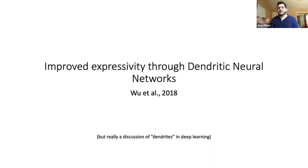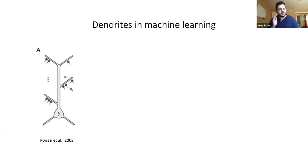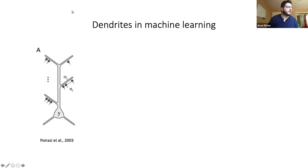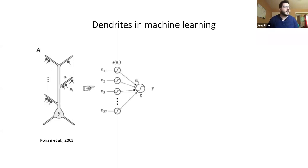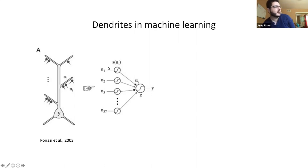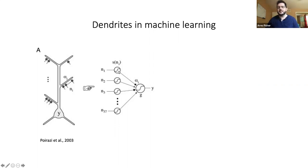I wanted to wrap my head around that and see what the potential is in different directions. The earliest reference I could find on using dendrites in machine learning — also cited by a lot of subsequent papers — was by Poirazi and Mel. What they did is approximate the firing rate of a pyramidal CA1 neuron by modeling it as a two-layer neural network with a sigmoidal output. So that was their best fit model — they found that each dendritic segment is like a little artificial neuron.